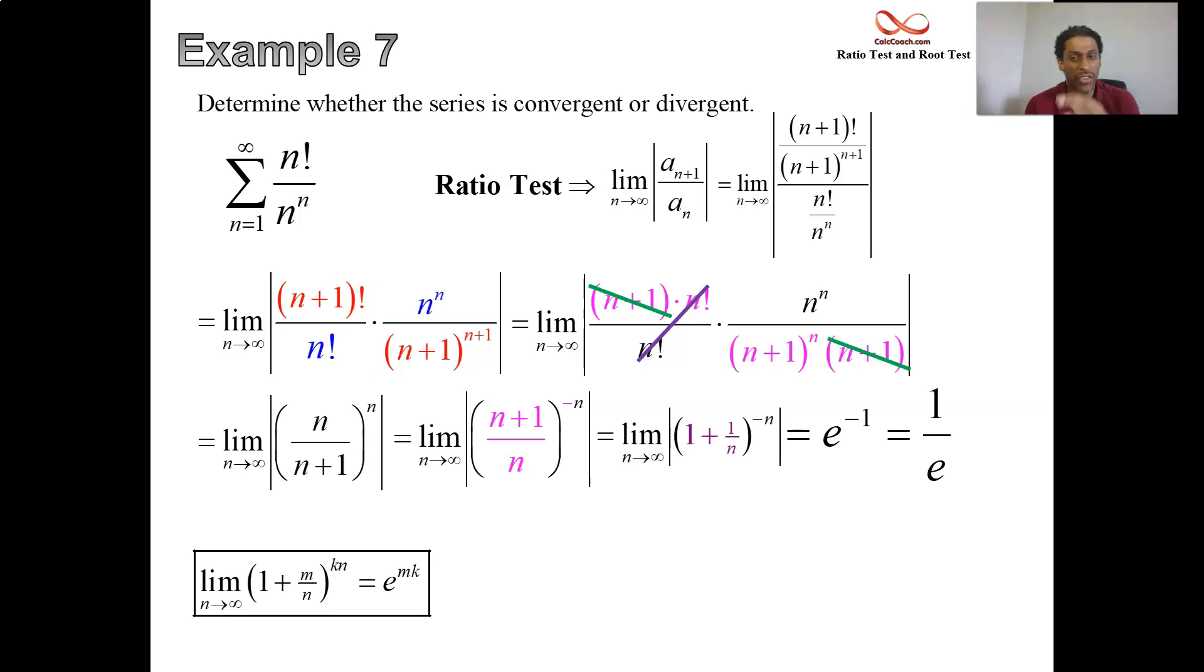Better thought of as 1 over e. We got to decide the size of this guy because if you're between 0 and 1, you converge. But if you're bigger than 1, you diverge. We need to know where this fits at, so it's better to write it as 1 over e. You know, e is about 2.71. 1 divided by 2.71, for sure that is less than 1. This series is convergent by the ratio test.